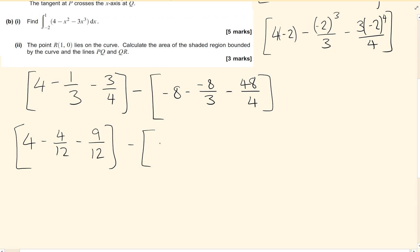And minus, well, 48 over 4 will actually simplify down to 12 straight away. So I've got minus 12 in there. So minus 20 minus minus 8 thirds.